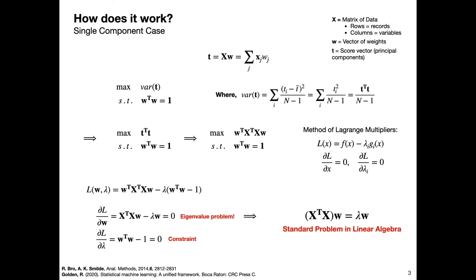This naturally extends to multiple components. We started out looking for a single component, but if you solve the eigenvalue problem and you have n columns in your matrix X and X is square, you're going to end up with n eigenvalues and n corresponding eigenvectors.